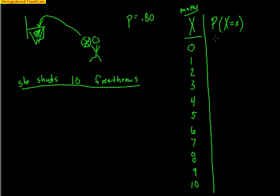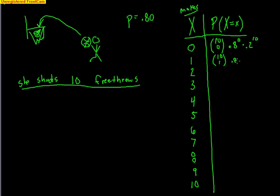We learned in the last video that to find the probability of making zero free throws, that would be 10 choose 0 times 0.8 to the zero (no successes) times 0.2 to the 10th (all failures). The next one would be 10 choose 1 times 0.8 to the first times 0.2 to the ninth. We can continue that pattern, though doing all the calculations would take quite a while.